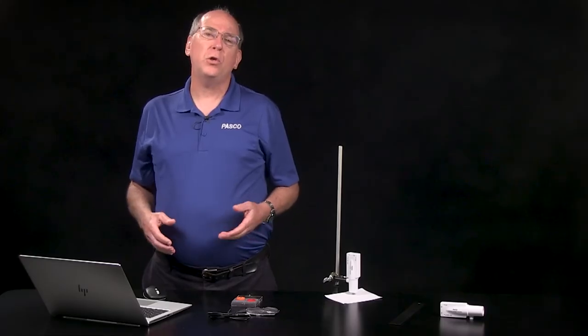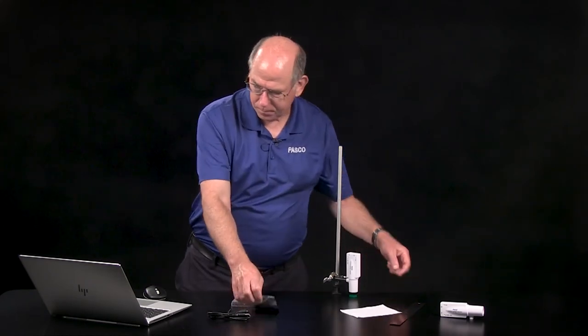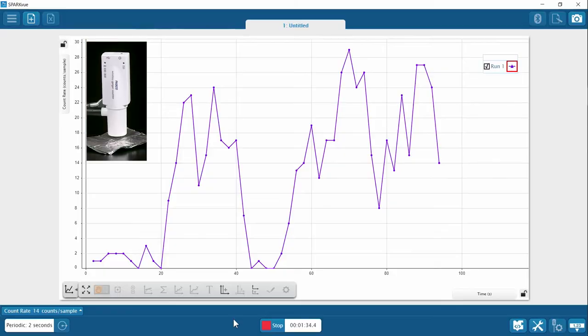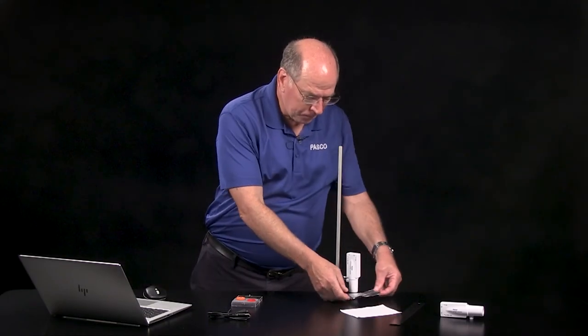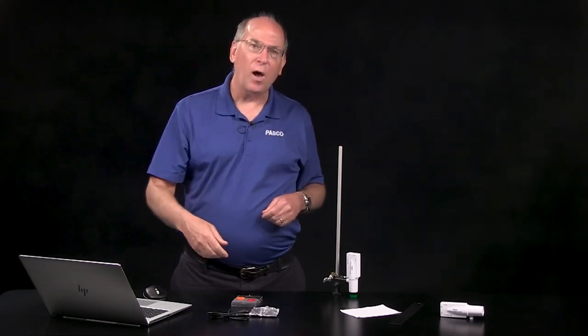Let's try 16 sheets of heavy-duty aluminum foil. It stops about half the radiation. Will 32 sheets stop all of it? Your students will want to find out for themselves.